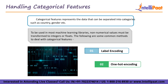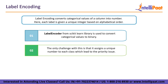Moving on to handling categorical features. Categorical data is a type of data used to group information with similar characteristics, while numerical data expresses information in the form of numbers. To be used in most machine learning libraries, non-numerical values must be transformed to integers or floats. Common methods to deal with categorical features are label encoding and one-hot encoding. In label encoding, the approach involves converting each value in a column into a number, where each label is given a unique integer based on alphabetical order. For its implementation, we import the label encoder class from the sklearn library, then split and transform the column, replacing existing text data with the new encoded data. The challenge with this is that it assigns a unique number to each class, which leads to a priority issue.